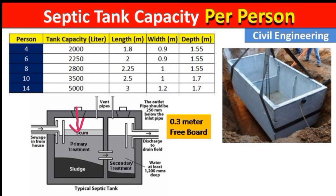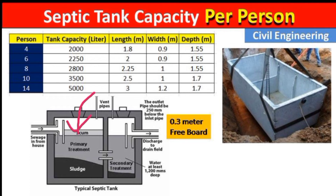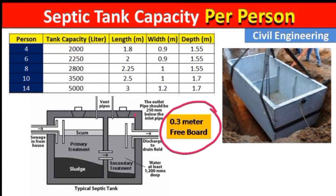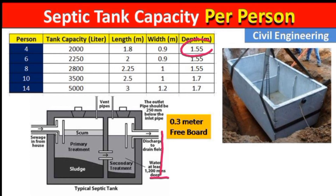Above the septic tank is a slab from which we can remove the sewage through a machine. These are the structural details of the septic tank. Remember that the freeboard should be 0.3 meters from the pipe, and the depth should be 1.55 meters for four persons with a water capacity of 2000 liters.